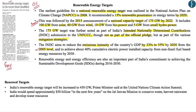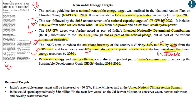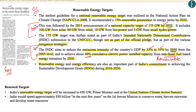Renewable energy and energy efficiency are also part of India's commitment towards achieving the Sustainable Development Goals from 2016 to 2030. What is important to remember is this 175 GW target of India by 2022 as well as what the Intended Nationally Determined Contributions of India are. Prime Minister Modi at the United Nations Climate Action Summit announced that India's renewable energy target will now be increased to 450 gigawatt. However, please remember it is just an announcement made by the PM and no official document in this regard has been released.